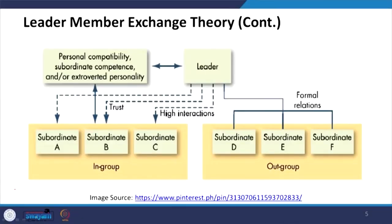How to decide in-groups and out-groups: subordinates ABC and DEF. The leader forms formal relationships with the out-group, while with in-group people he builds trust and high interaction, knowing the personal compatibility, competence and extroverted personalities of the ABC subordinates. With the out-group DEF there is no trust and no interaction. The interaction with ABC because of trust and knowing personal capabilities makes the leader-in-group relationship much wider compared to the out-group.